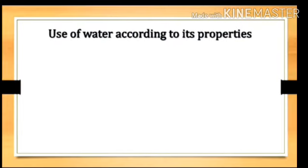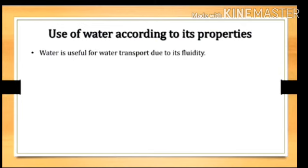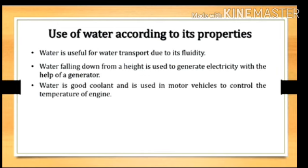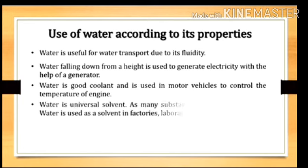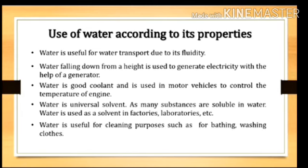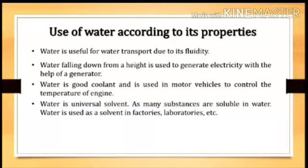Now let's look at the uses of water according to its properties. Water is useful for water transport due to its fluidity. Water falling from a height is used to generate electricity with the help of a generator. Water is a good coolant and is used in motor vehicles to control engine temperature. Water is a universal solvent — as many substances are soluble in water, it is used as a solvent in factories and laboratories. Water is also useful for cleaning purposes.